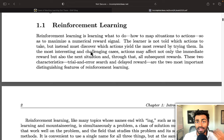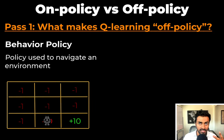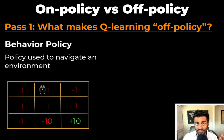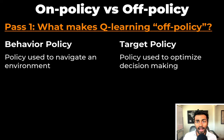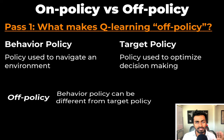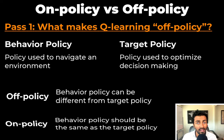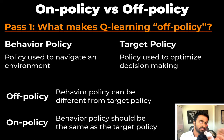In order to learn this policy, reinforcement learning algorithms are used. Q-learning is one such popular off-policy reinforcement learning algorithm. Off-policy reinforcement learning algorithms make a crucial difference between two types of policies. The first is the policy used to take action and navigate the environment, known as a behavior policy. The second is the policy used to actually learn — in Q-learning, it's used to update the Q-values in a Q-table — and this is the target policy. For off-policy algorithms, the behavior policy can be different from the target policy, while for on-policy algorithms these two policies need to be the same. This is a very critical difference between on-policy and off-policy algorithms.